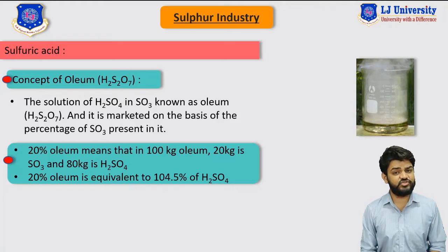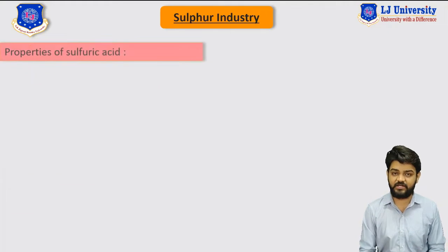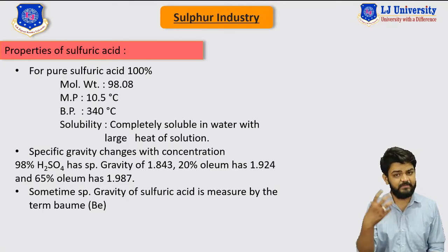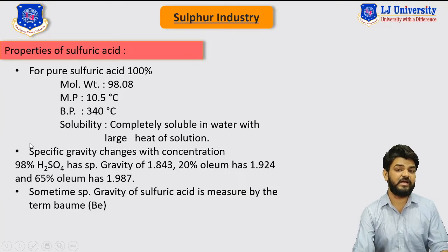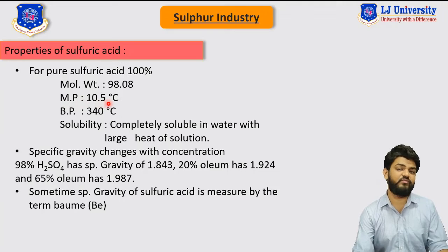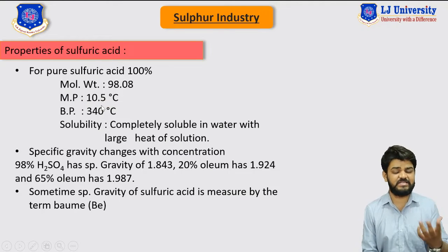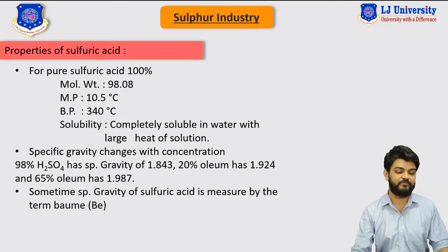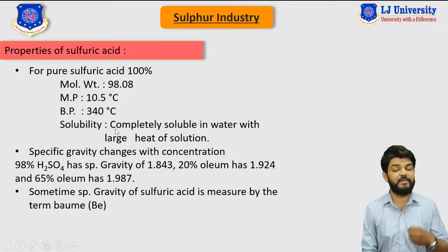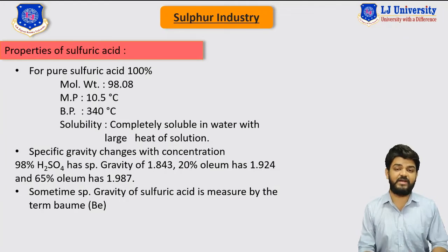Let us quickly discuss the different properties of sulfuric acid, which are very useful for one-mark MCQ or competitive exam questions. Sulfuric acid has a molecular weight of 98.08 g/mol and a melting point of 10.5°C, meaning it is mainly available in the liquid state. It has a boiling point of 340°C and is completely soluble in water, evolving a large amount of heat when it dissolves.